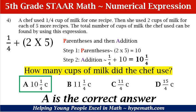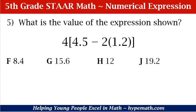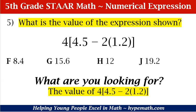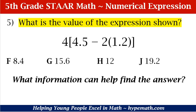What is the value of the expression shown? We have 4 in brackets, 4.5 minus 2 times 1.2. F is 8.4. Answer choice G is 15.6. Answer choice H is 12. Answer choice J is 19.2. Now let me see if you remember, what is the first question we need to ask? If you said what are we looking for, you are absolutely correct. So what are we looking for? We are looking for the value of our expression.